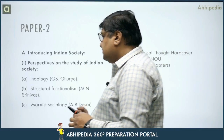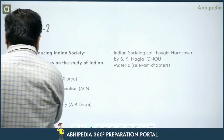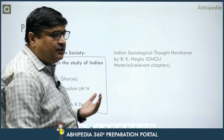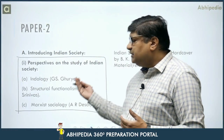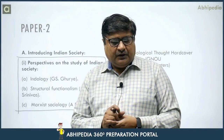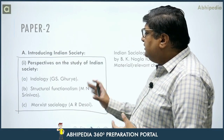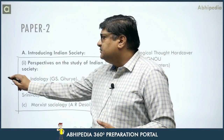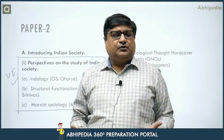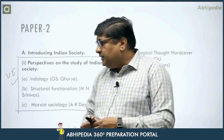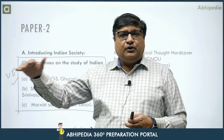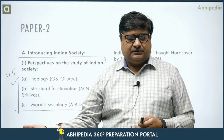The first chapter of Paper 2, Section A, is 'Perspectives on the Study of Indian Society.' It is just like the thinkers we studied in Paper 1 — similarly this chapter covers thinkers in Indian society and how people have tried to study Indian society. Only one or two questions come from this, but this is a very important chapter because it forms the base of your entire Paper 2.